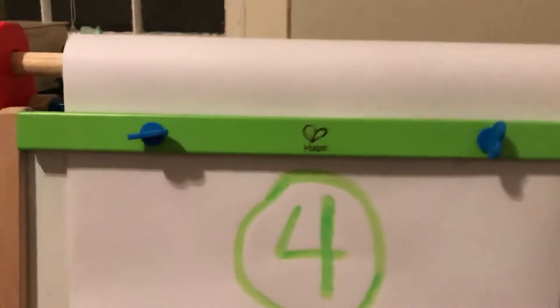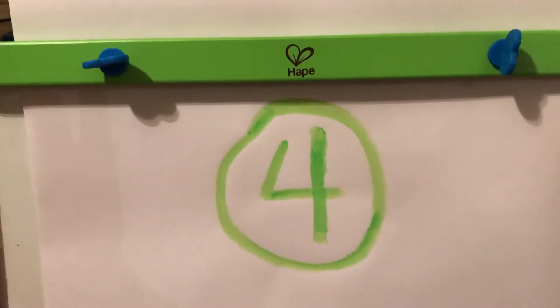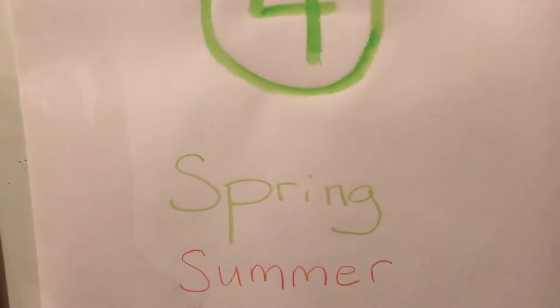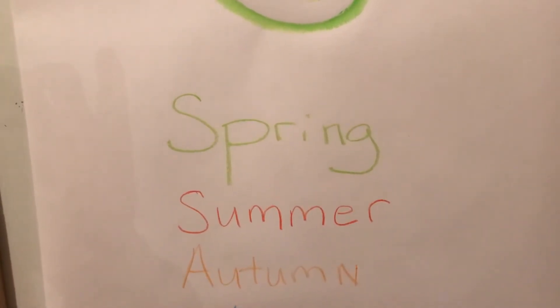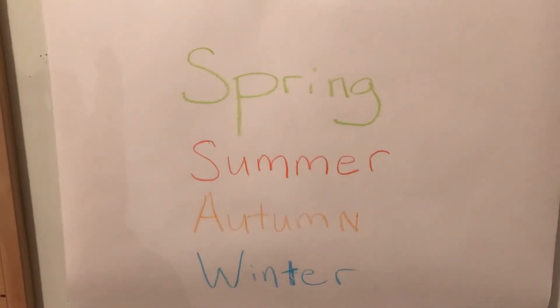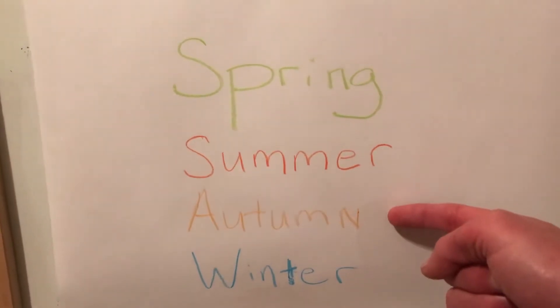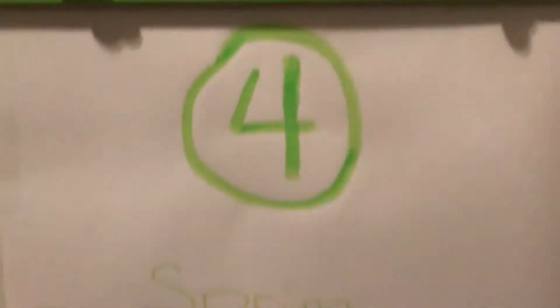Today I want to talk to you a little bit about our seasons and why we have them. First I want to ask, how many seasons do we have? Did any of you say four? We have four seasons. Right now we are in spring. After spring we have summer, and then autumn, and then winter. So let's count those: one, two, three, four. Four seasons.